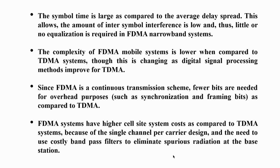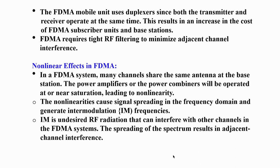FDMA can transmit information continuously using that particular frequency, so synchronization and framing are not required in FDMA, unlike TDMA. The FDMA system has higher per-cell system cost compared to TDMA because we are using a single channel for a single user. We also need separate band-pass filters to suppress radiation at the base stations. FDMA requires hard filtering to minimize adjacent channel interference, since each channel uses a different frequency and one frequency should not interfere with adjacent frequencies.